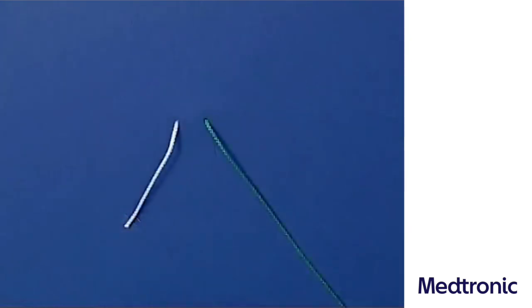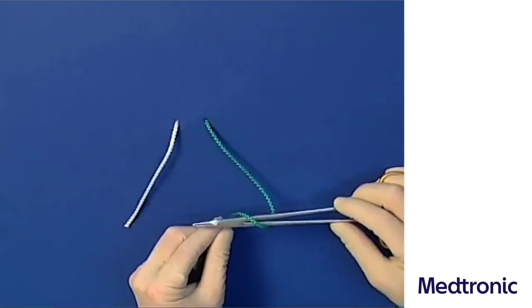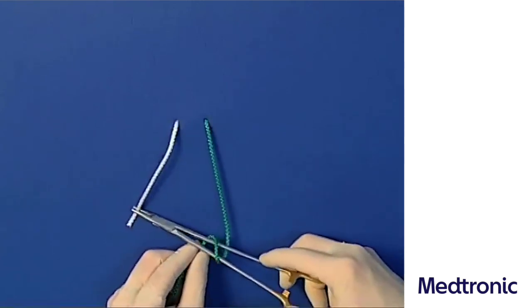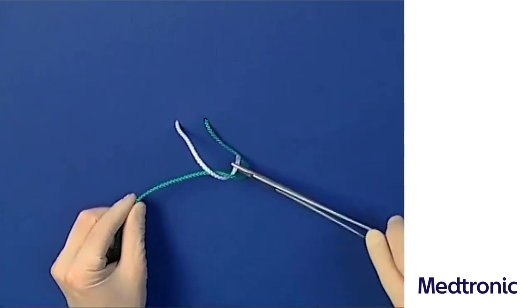Alternatively, the long suture end can also be wound around the needle holder from above. After grasping the short suture end, it is pulled through the produced loop. Both suture ends are again pulled crosswise.